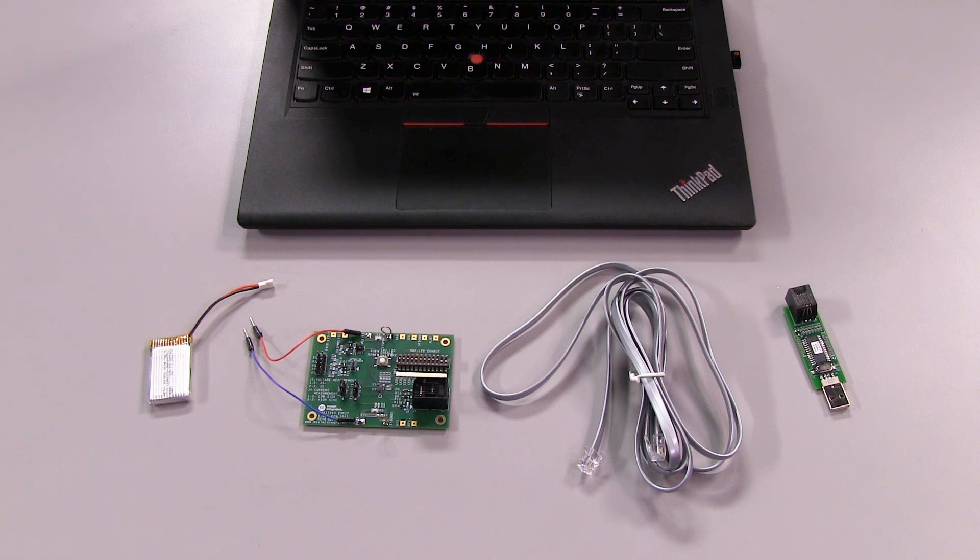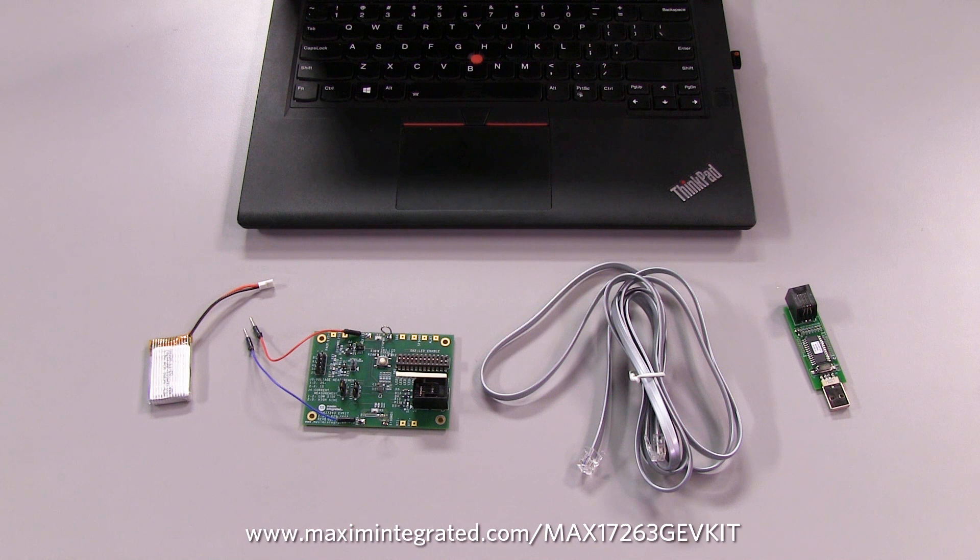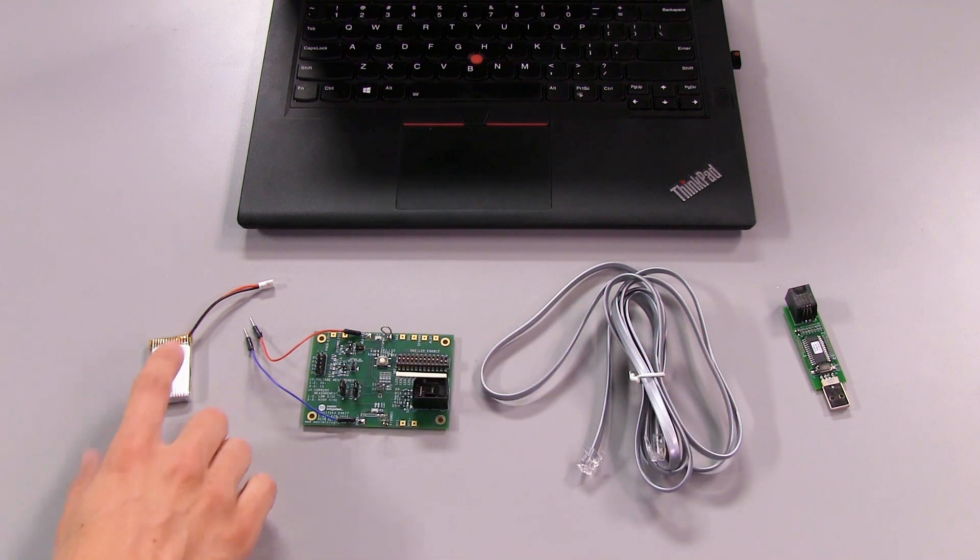Now that I've gone over the basics, I'll use the MAX17263 evaluation kit to demonstrate the various features and explain them as I go. For this demo, I'll be using the evaluation board with its included RJ11 cable and USB adapter, a lithium battery, and my PC.